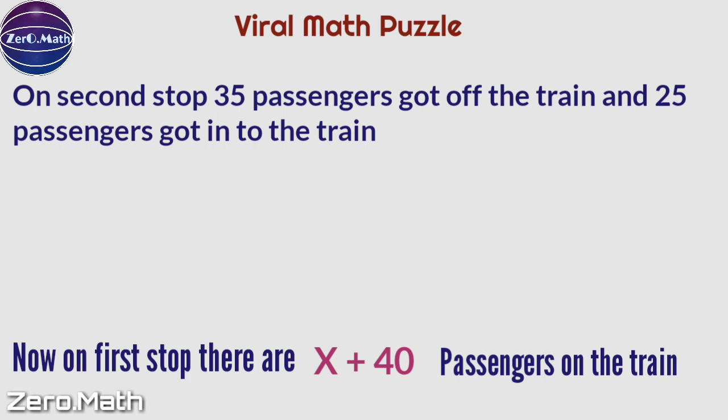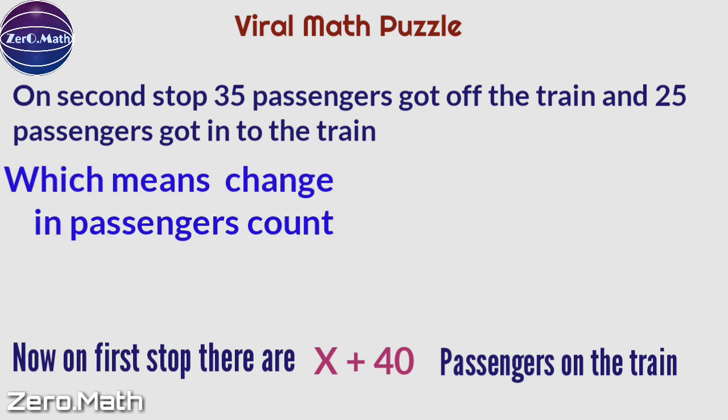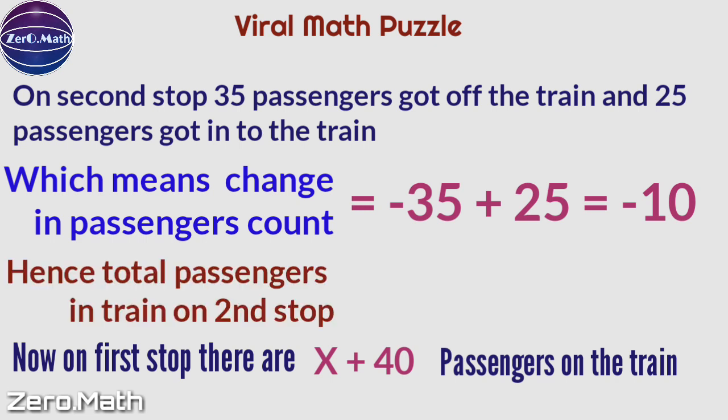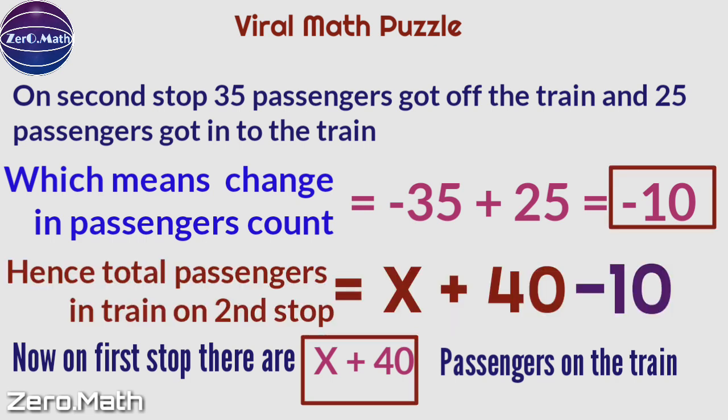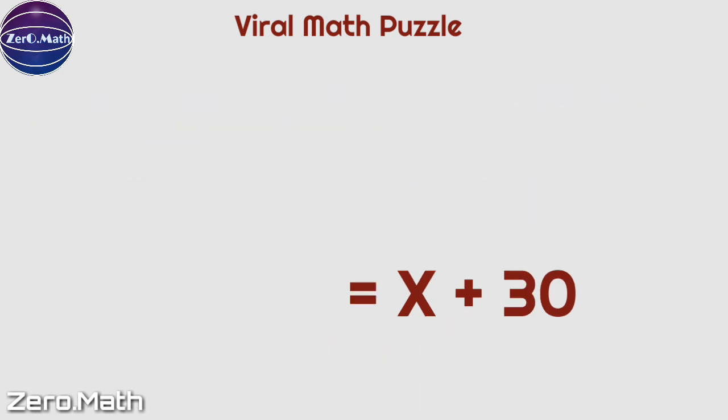On the second stop, 35 passengers got off and 25 got on, which means the change in passenger count equals -35 + 25 = -10. The total passengers on the second stop is X + 40 - 10 = X + 30.